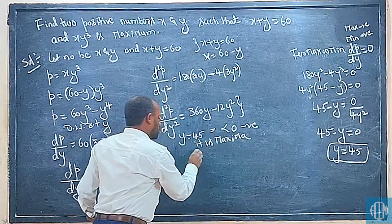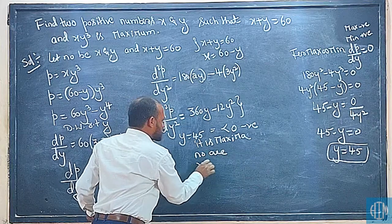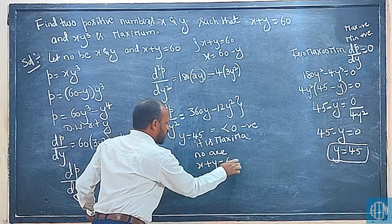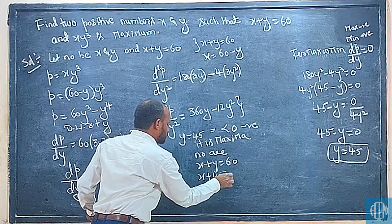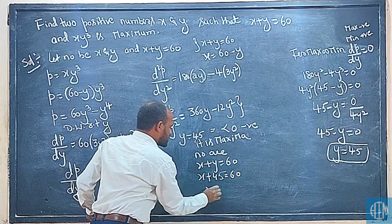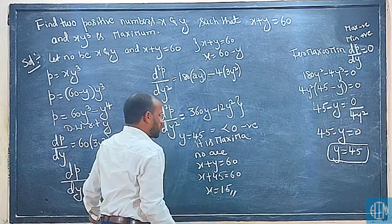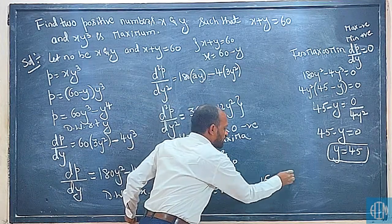Now the numbers are x plus y equals 60. What is y? Y value is 45. Therefore x is equal to 15. The answer is 15 comma 45.